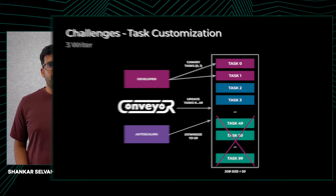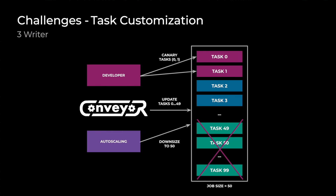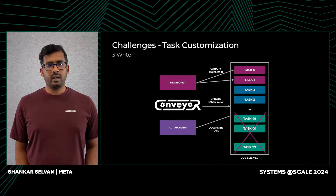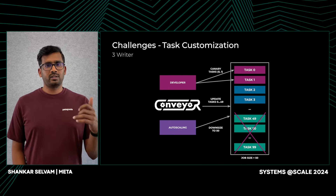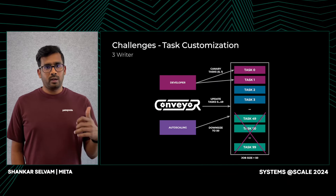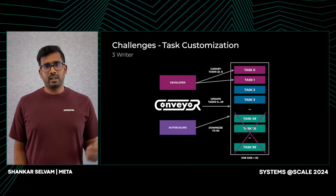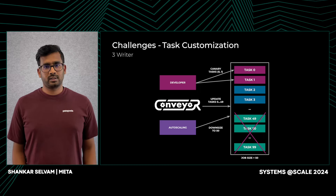Furthermore, developers are also constantly working on new features and they might want to expose their feature to a small amount of production traffic. They do this by directly targeting a canary on specific Twine tasks. If the canaries coincide with a push signal, this could further weaken the push signal for Conveyor. We can see how these different actors, while they work well in isolation, when they coincide, they run into conflicts.